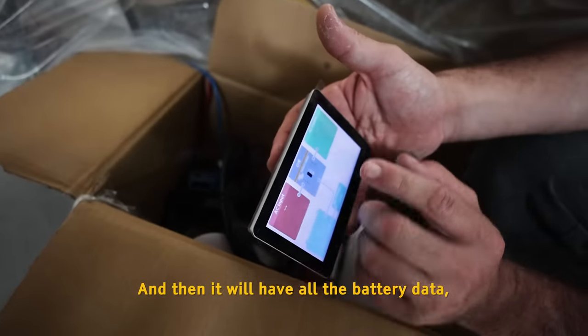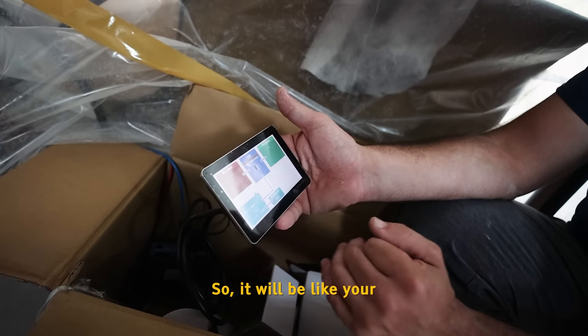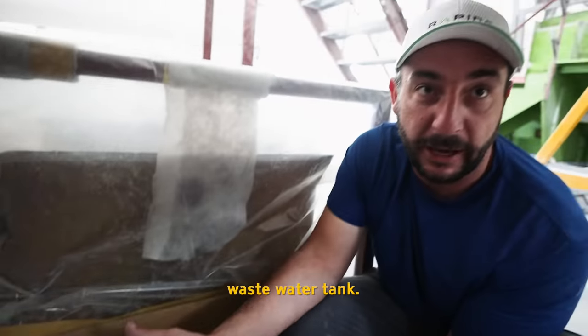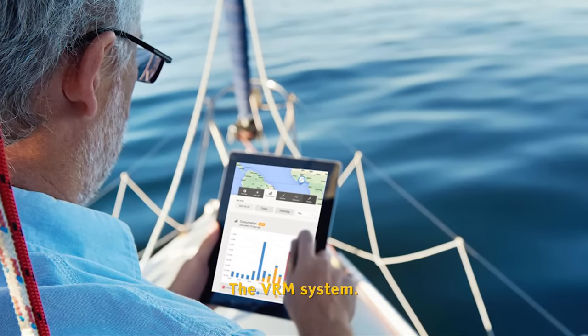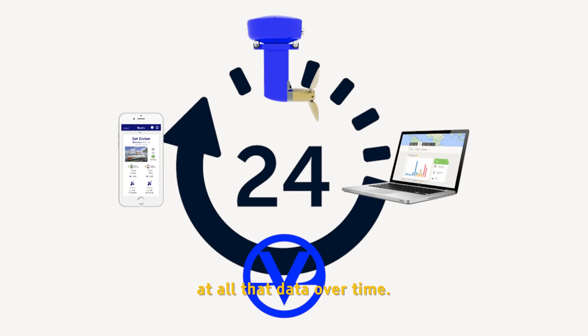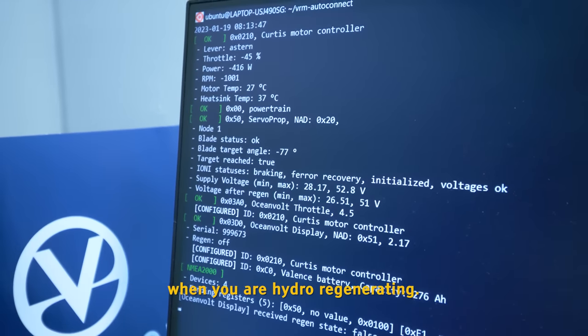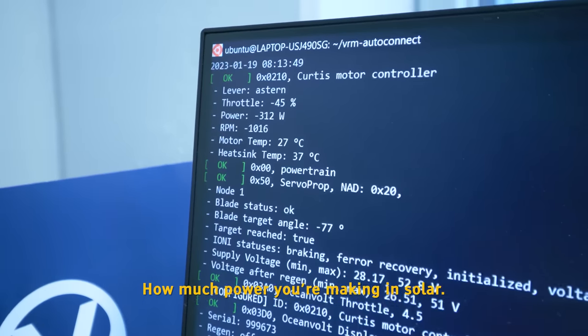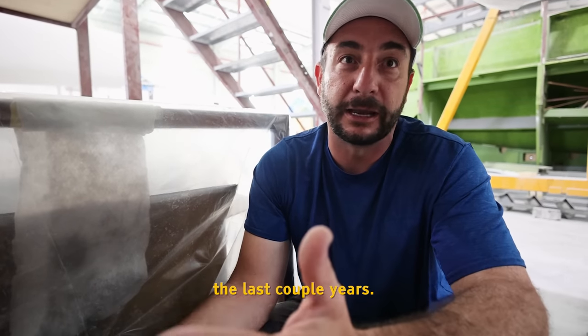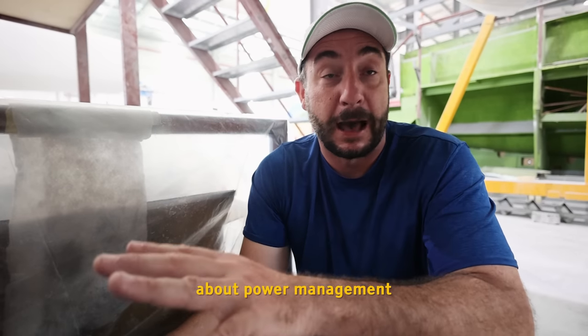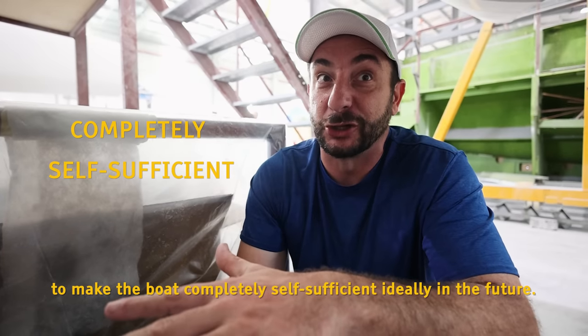And then it'll have all the battery data. It'll have the solar data on it. It can take four tank positions. So it'll be like your fuel tank, water tank, wastewater tank. And then you can log in to the Victron remote monitor, their VRM system. And on that, you'll be able to look at all that data over time. So you'll be able to see like when the integral system is running into the system, when you're hydro regenerating, how much power you're making in solar. You can see it for the last hour, the last year, the last couple of years. And that way you can make all the decisions about power management and stuff like that to make the boat completely self-sufficient ideally in the future.